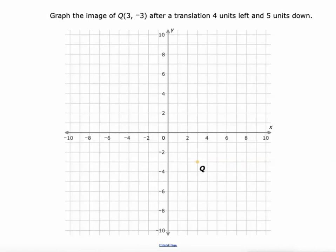Okay, so here's another one. We're going to graph this image, 3, negative 3, after a translation 4 units left and 5 units down. So 4 left.